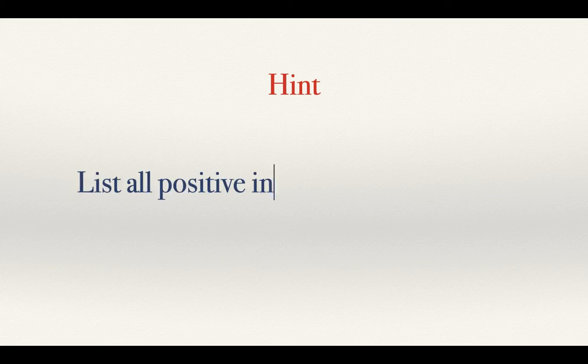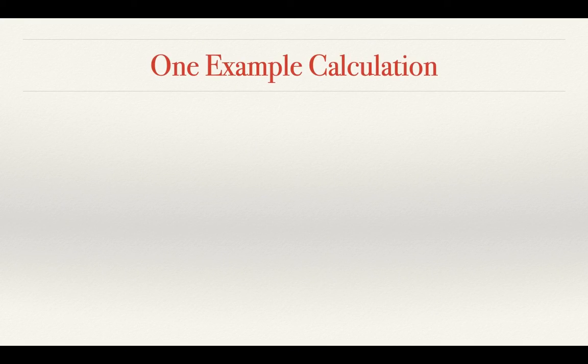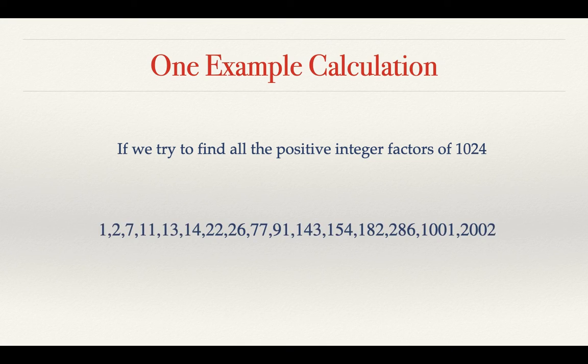Let's look at the first hint. List all positive integer factors of 2020. Our first step of solving this problem is the listing of factors. Now before doing that, let's check one example calculation. Suppose we are asked to find all positive integer factors of 1024. We can do this very easily.